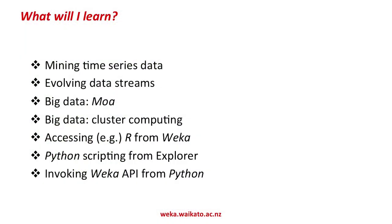This new course is Advanced. We're going to be looking at new kinds of data. We're going to be looking at time series, for example, where the data evolves over time and your job is to predict the future. Or situations where the characteristic of the source changes slowly over time, like it does in real life, and your job is to track those changes.